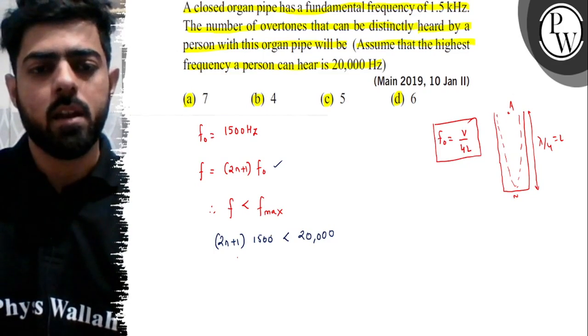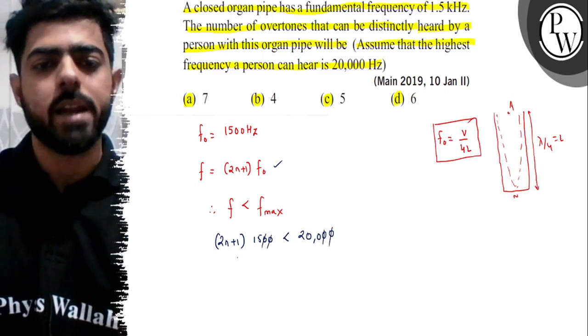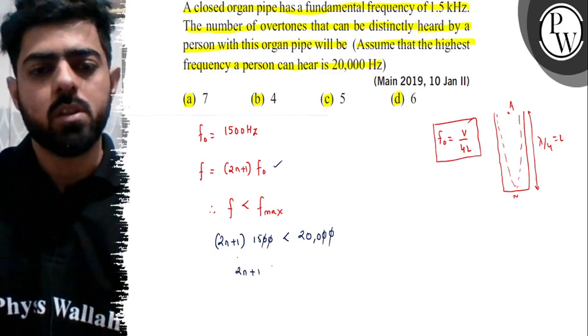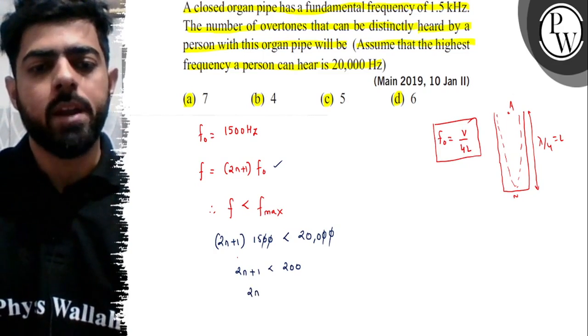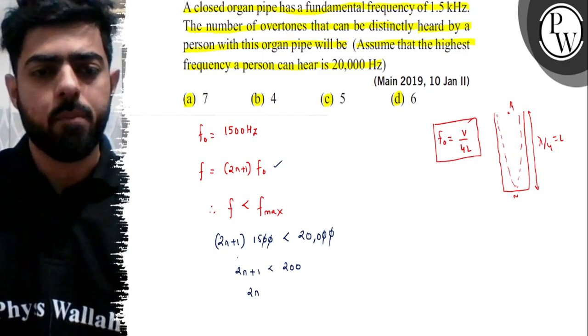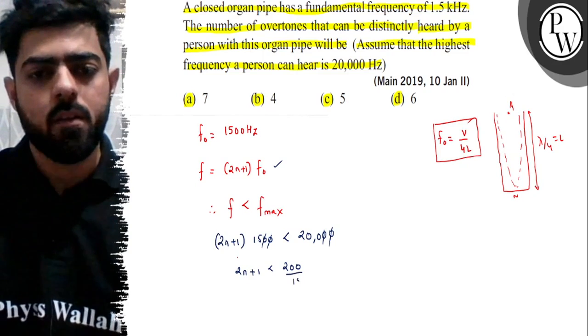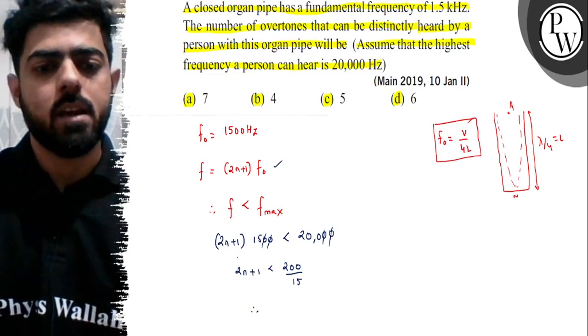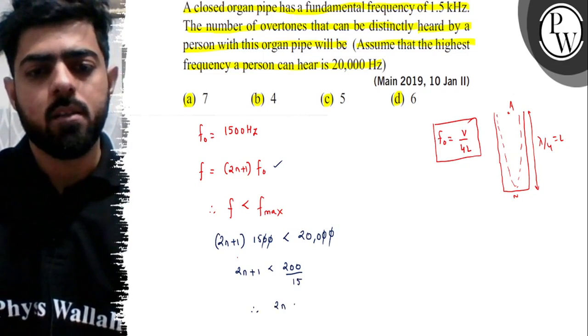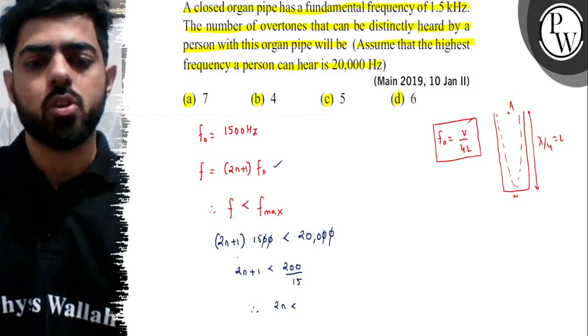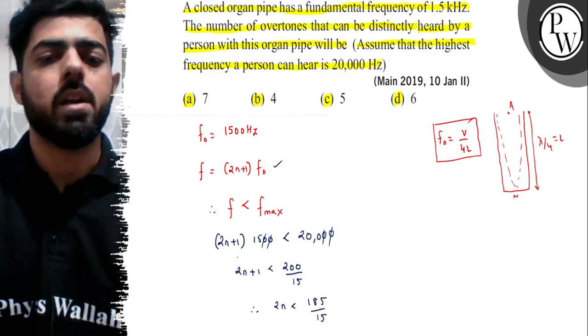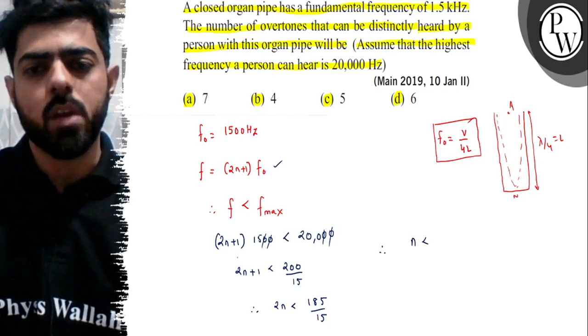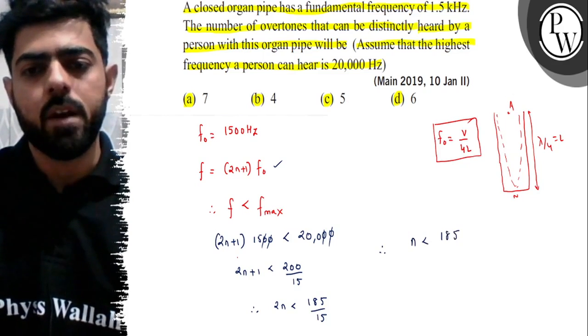Canceling two zeros, we get 2n+1 < 200/15. Therefore, 2n < (200-15)/15 = 185/15. So n < 185/30, which gives us n < 6.16.